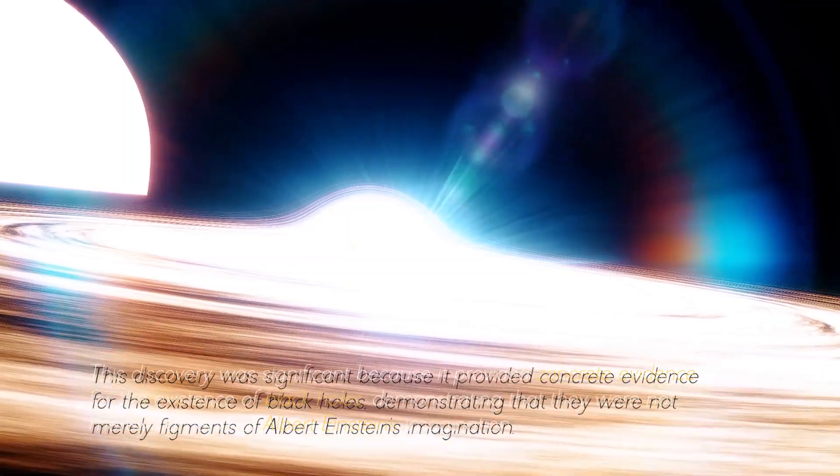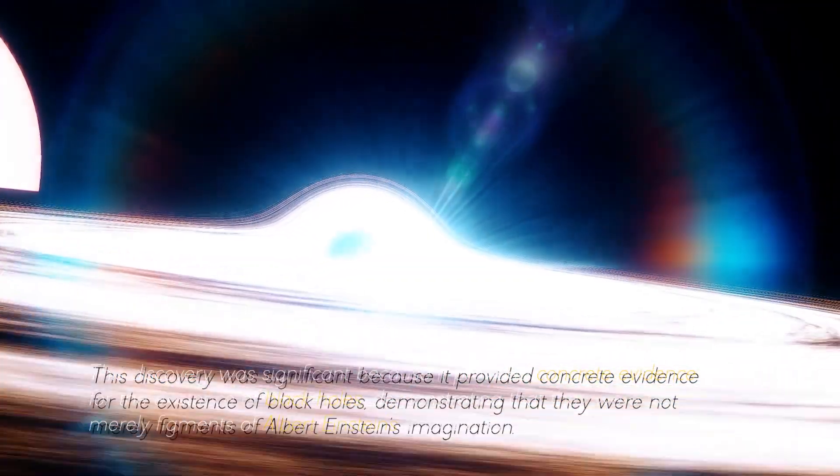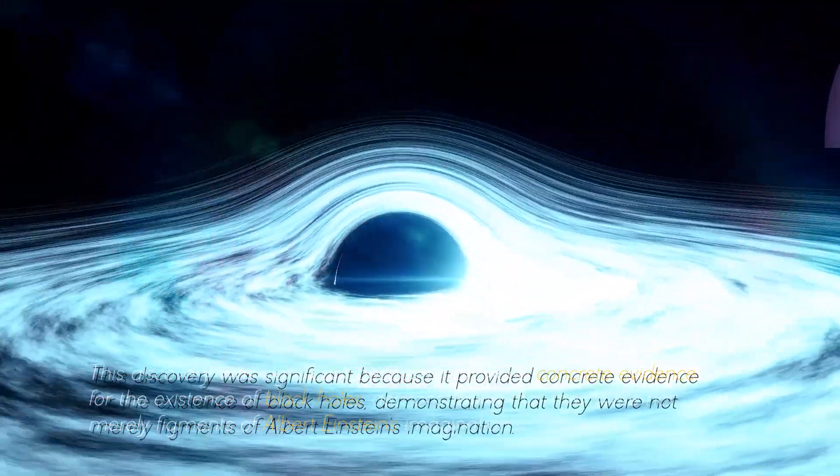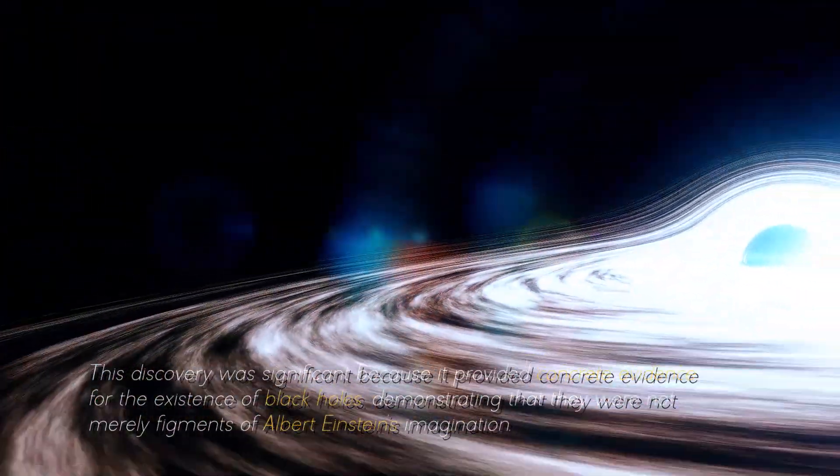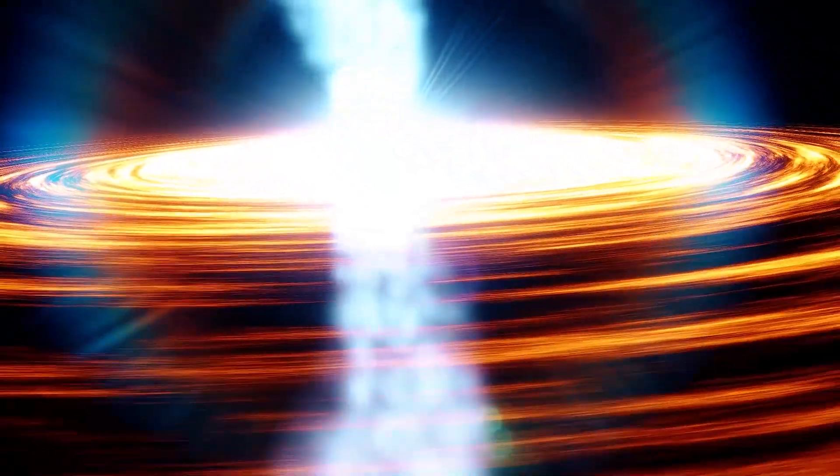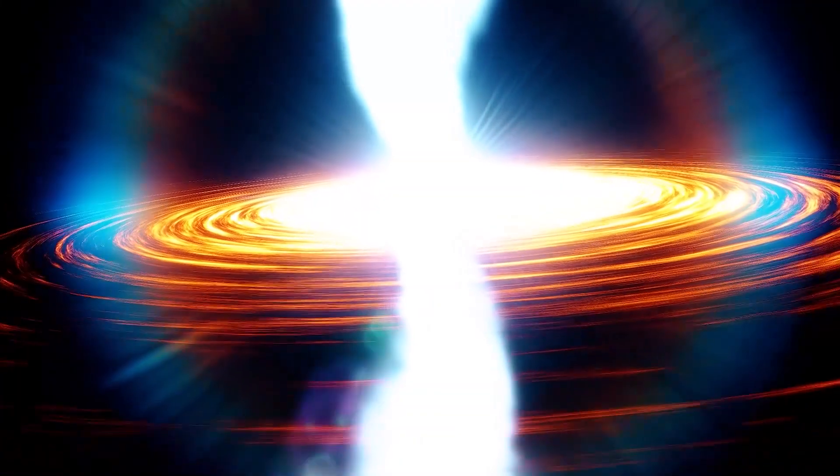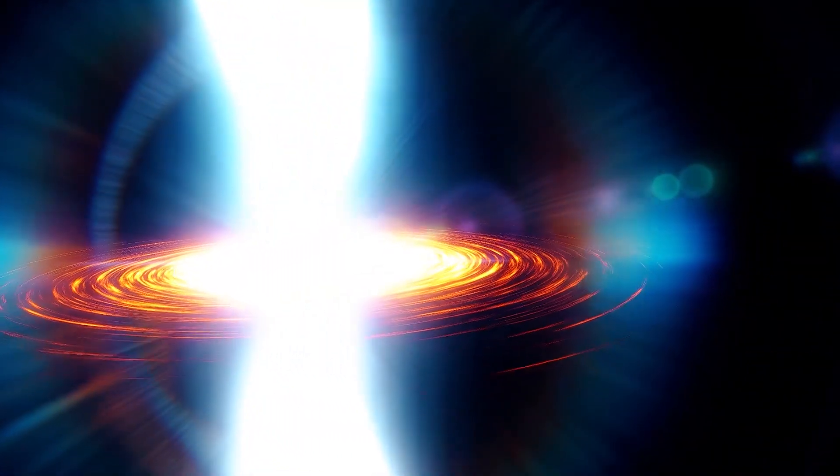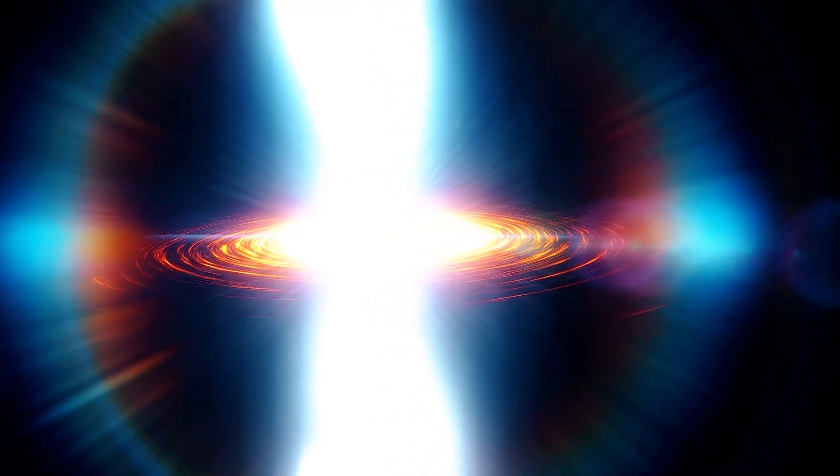This discovery was significant because it provided concrete evidence for the existence of black holes, demonstrating that they were not merely fragments of Albert Einstein's imagination. It also revealed the existence of an incredible entity in space that we urgently needed to investigate. This black hole was named Cygnus X-1 and is located in the constellation Cygnus, at a distance of approximately 6,000 light years from Earth.